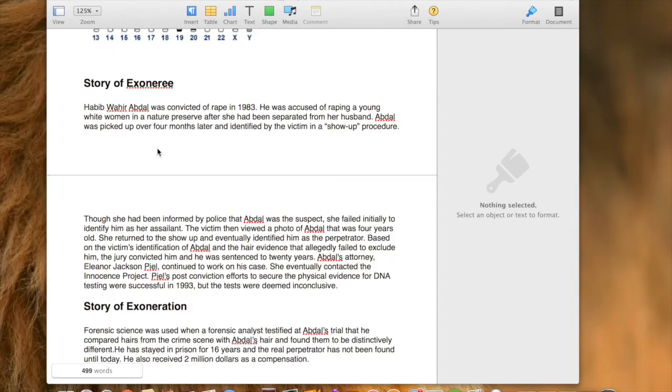Story of Exoneration. Habib Bahar Abdel was convicted of rape in 1983. He was accused of raping a young white woman in a nature reserve after she had been separated from her husband. Abdel was picked up over four months later and identified by the victim in a show-up procedure. She had been informed by police that Abdel was the suspect but failed initially to identify him as her assailant. The victim then viewed a photo of Abdel that was four years old. She returned to the show-up and eventually identified him as the perpetrator.